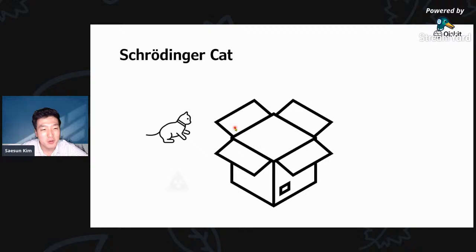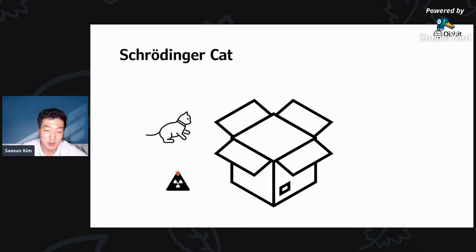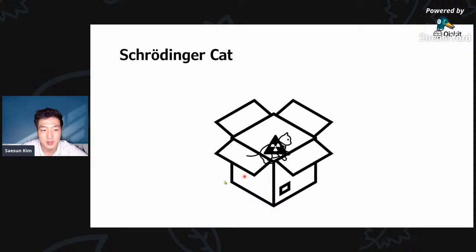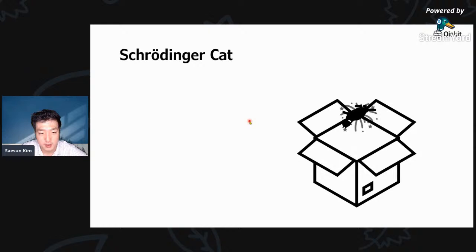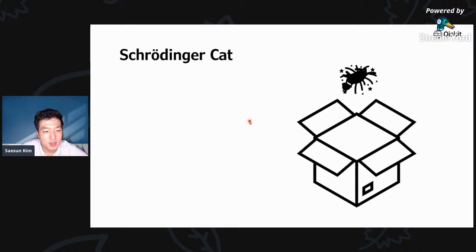Schrödinger also did not like quantum mechanics. He came up with a fun thought experiment: let's put a cat and a poison into a box. The poison is in a superposition state with 50% chance to become dangerous and 50% chance to become safe. According to quantum mechanics, when you close the box, the universe will split into two — one with a live cat and one with a dead cat. When you open the box, you decide the universe: it can be live or dead. But if you don't look at it, two universes co-exist at the same time until you look.